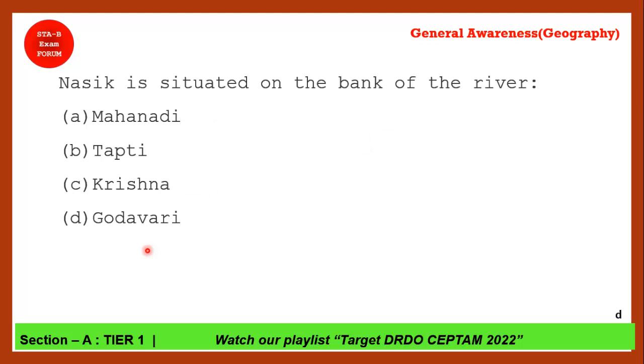Next question: Nasik is situated on the bank of which river? The correct answer is option D — Godavari. The origin of Godavari is itself at Nasik.